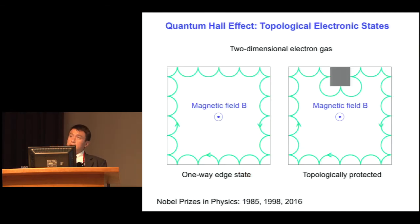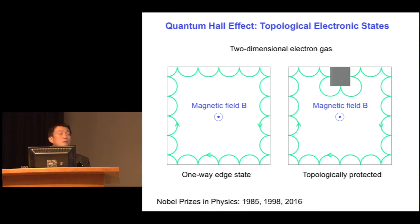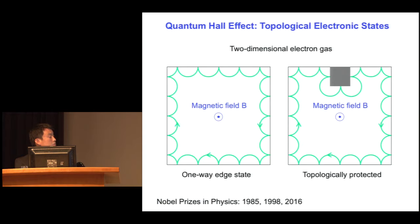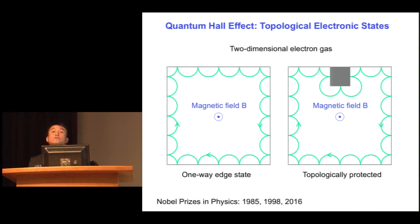This ability of magnetic field to break time reversal symmetry has very profound consequences in fundamental physics. There is a fascinating effect called the quantum Hall effect. In this effect, we imagine an electron moving in a plane with a perpendicular magnetic field applied. If you inject an electron on the edge, it goes through circular motion, hits the boundary, gets reflected, and again goes through the same circular motion. In doing so, it forms a one-way edge state at the edge of the sample of this two-dimensional electron gas. This one-way edge state is topologically robust.